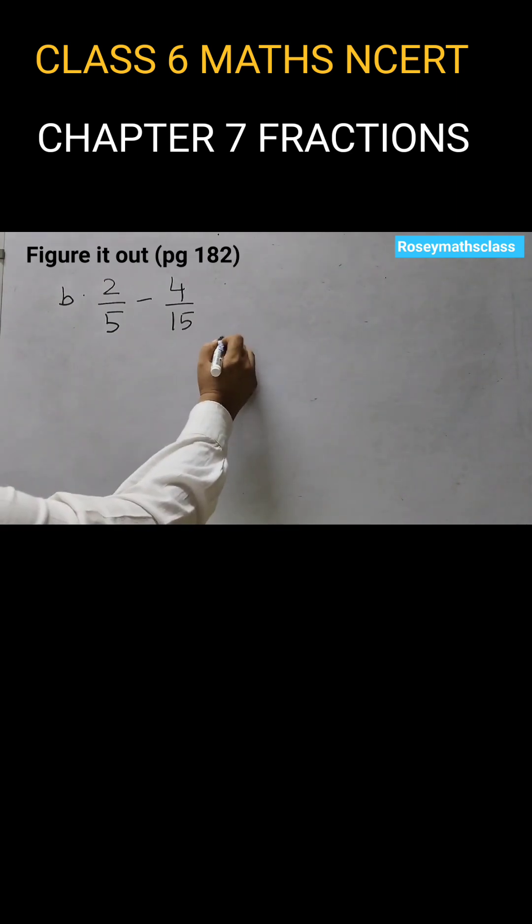what we will do is we will write it as 5, 15, then divide by 5. 5 ones are 5, 5 threes are 15. And then again do by 3. So we get 5 into 3. So LCM would be 15.